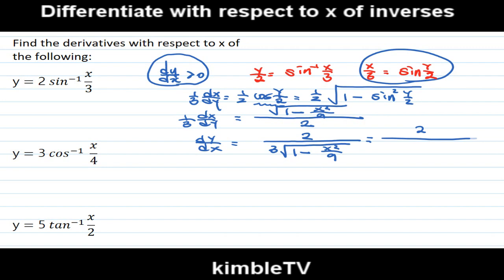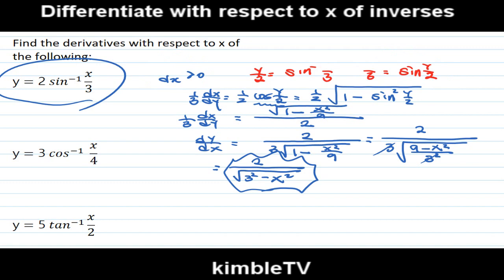And dy/dx equals 3 × 2/[3√(1 - x²/9)]. This is 2/[3√(1 - x²/9)]. 9 is the same as 3². And this one cancels. Therefore 2/√(3² - x²). This is the derivative of this one.